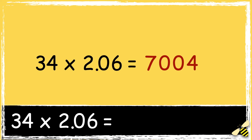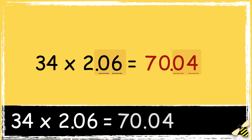We need to place the decimal point in the answer. We count the number of decimal places in the factors: 2.06 has two digits after the decimal point, so we need to ensure that there are two digits after the decimal point in our answer. So the answer is 70.04.